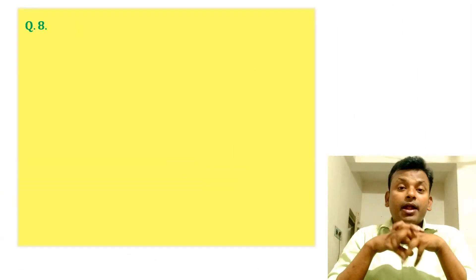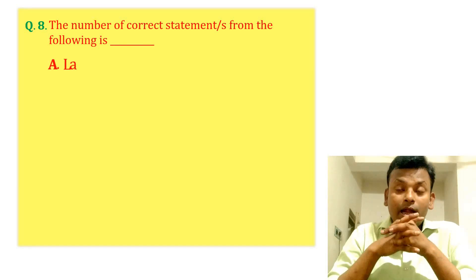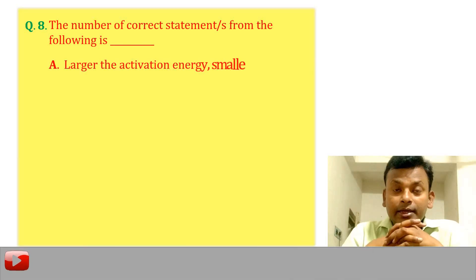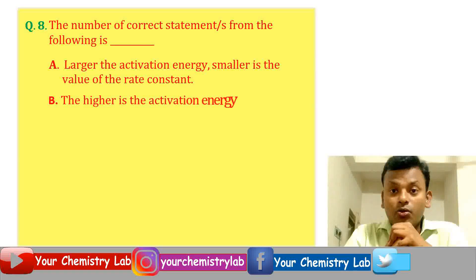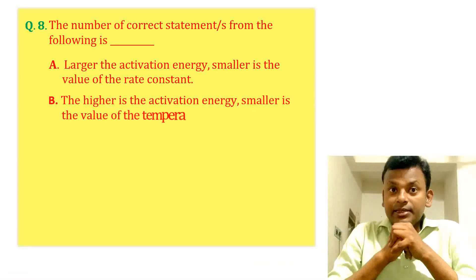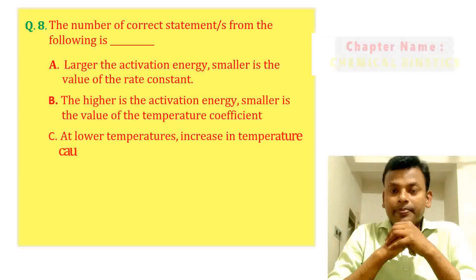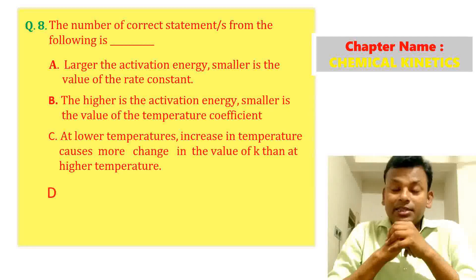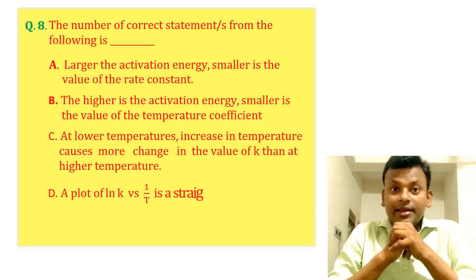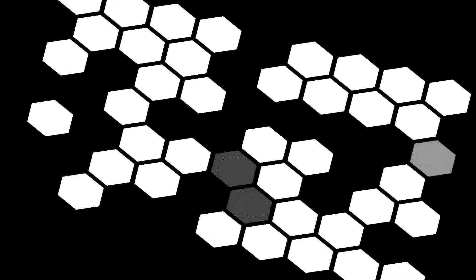Question 8: The number of correct statements from the following is: A. Larger the activation energy, smaller is the value of rate constant. B. The higher is the activation energy, smaller is the value of temperature coefficient. C. At lower temperatures, increase in temperature causes more changes in the value of K than at higher temperature. D. A plot of ln K versus 1 by T is a straight line with slope equal to minus Ea by R.